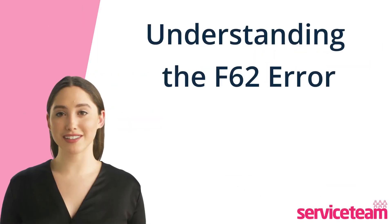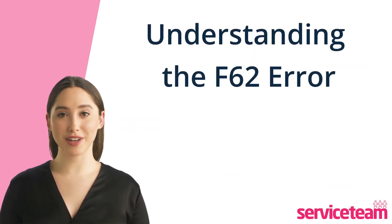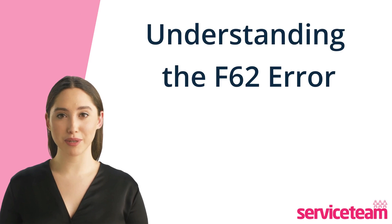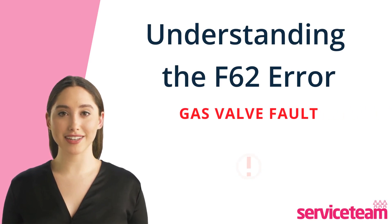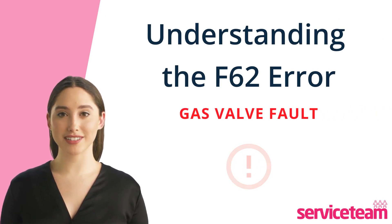If you see the Vaillant F62 fault code on your boiler, it means there's a problem with the gas valve. It especially indicates that the valve doesn't open when the boiler is trying to ignite.